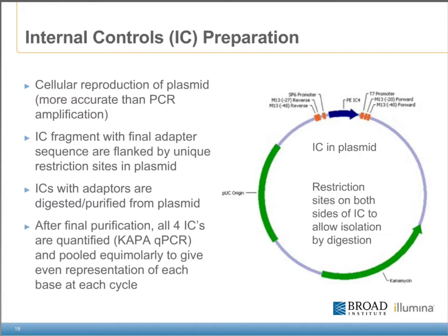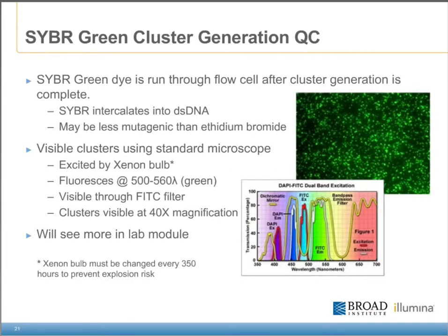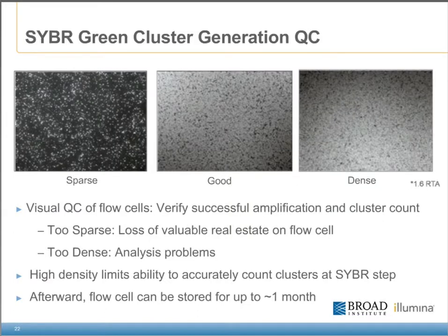We'll cover a bit more about these internal controls in the analyzing data module. I am now going to go over our CyberGreen QC and how we use it to visually confirm cluster generation and optimal density prior to continuing on to LBPA and sequencing. CyberGreen is a fluorescent dye that intercalates into double-stranded DNA. Following cluster amp, we run dilute CyberGreen dye through the flow cell where it intercalates into double-stranded cluster molecules. We then visualize the clusters using a standard microscope at 40x magnification. Our CyberQC step is a visual confirmation of successful cluster amplification, used to verify that clusters are present and often to actually estimate cluster counts — especially useful for projects requiring a specific density.